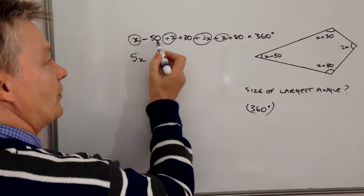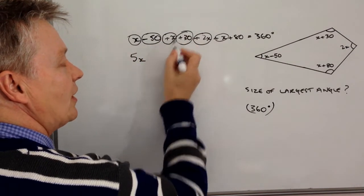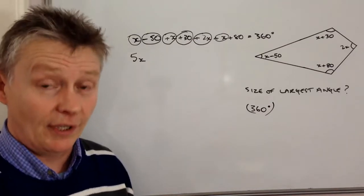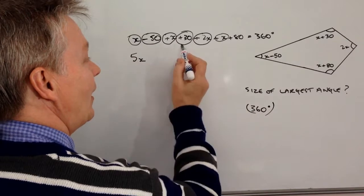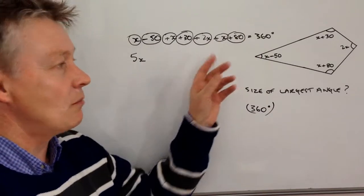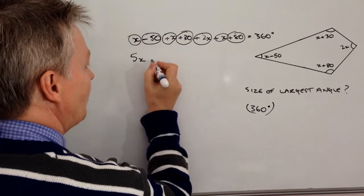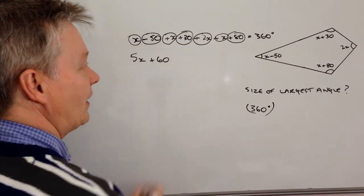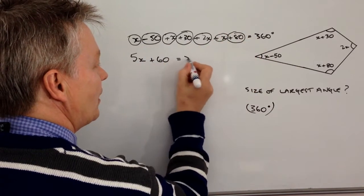Then we've got to add up the numbers. So I'm going to start with minus 50 plus 30. Well, minus 50 plus 30 is minus 20. Then I've got an 80 here. So minus 20 plus 80 is going to give me plus 60. So that's these numbers added up and that equals 360.